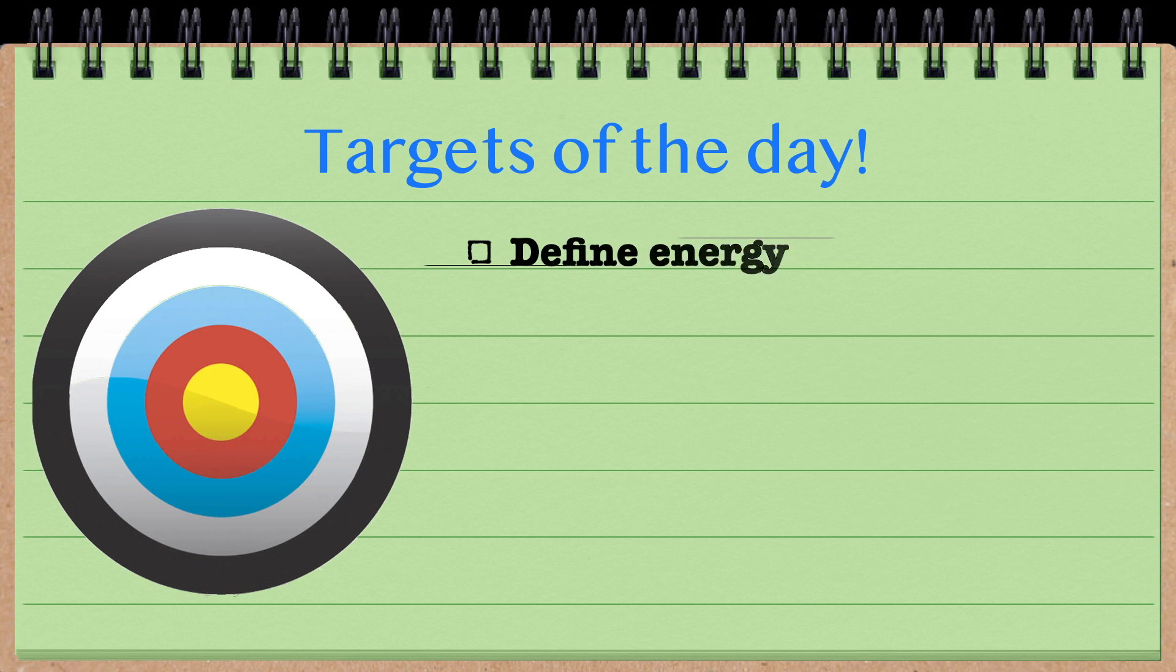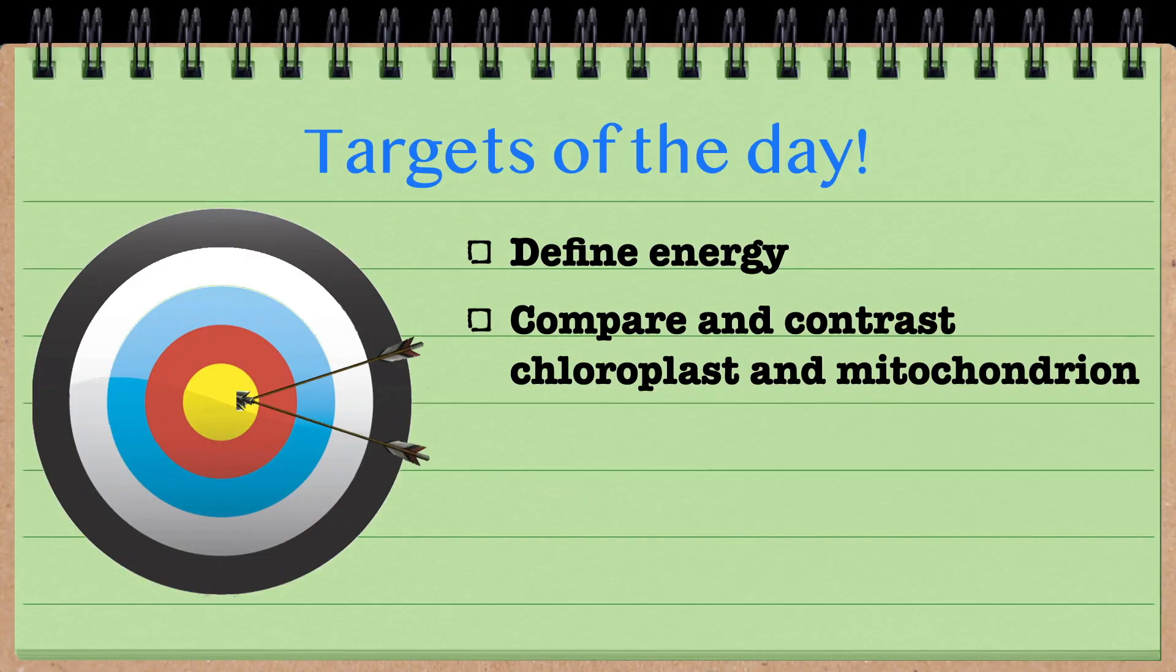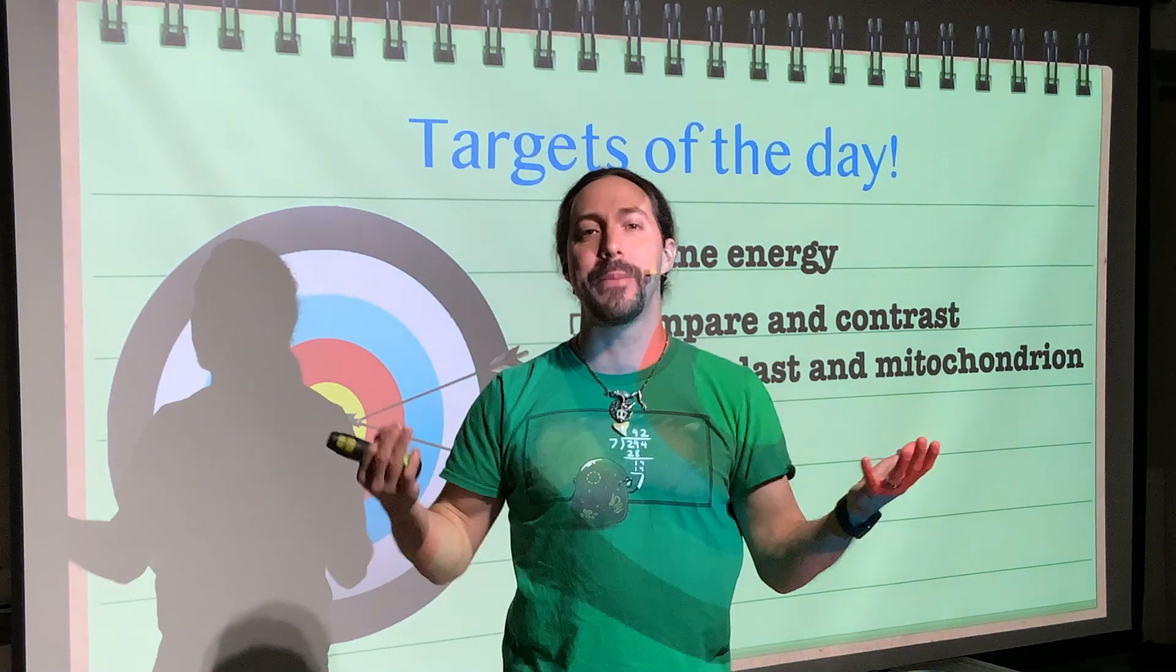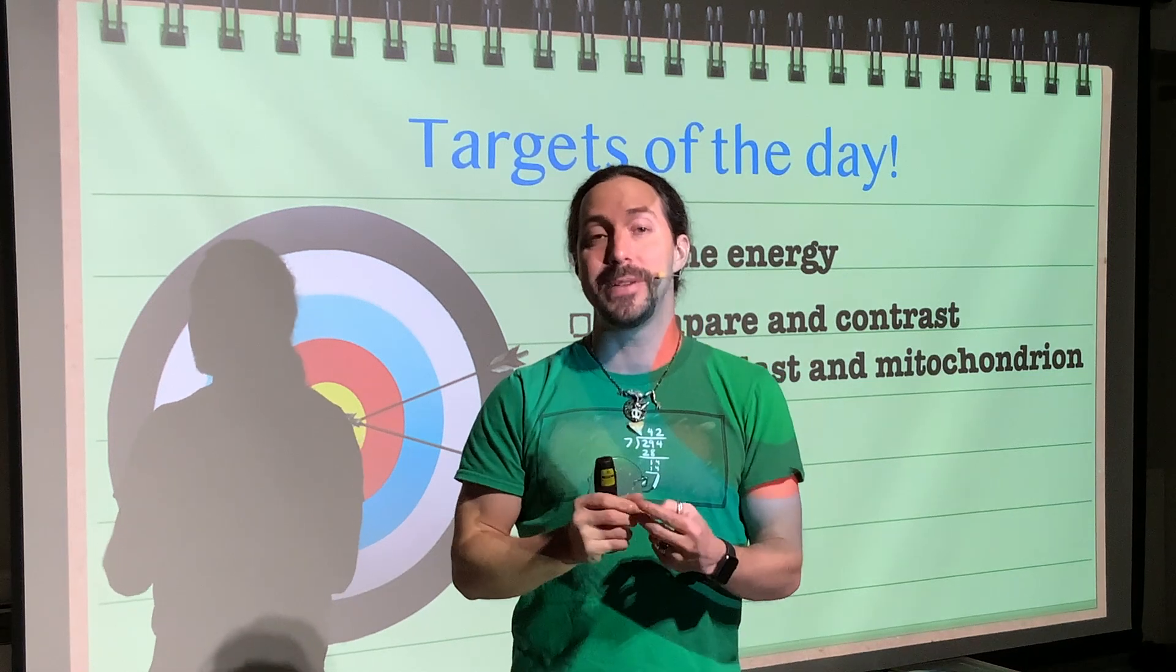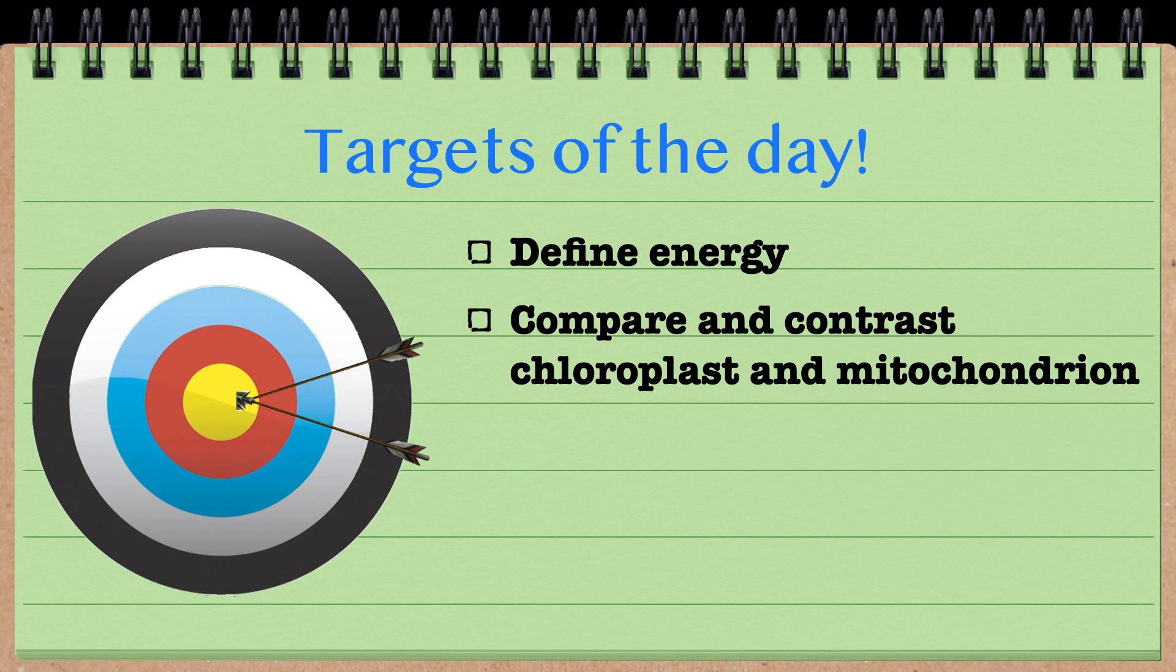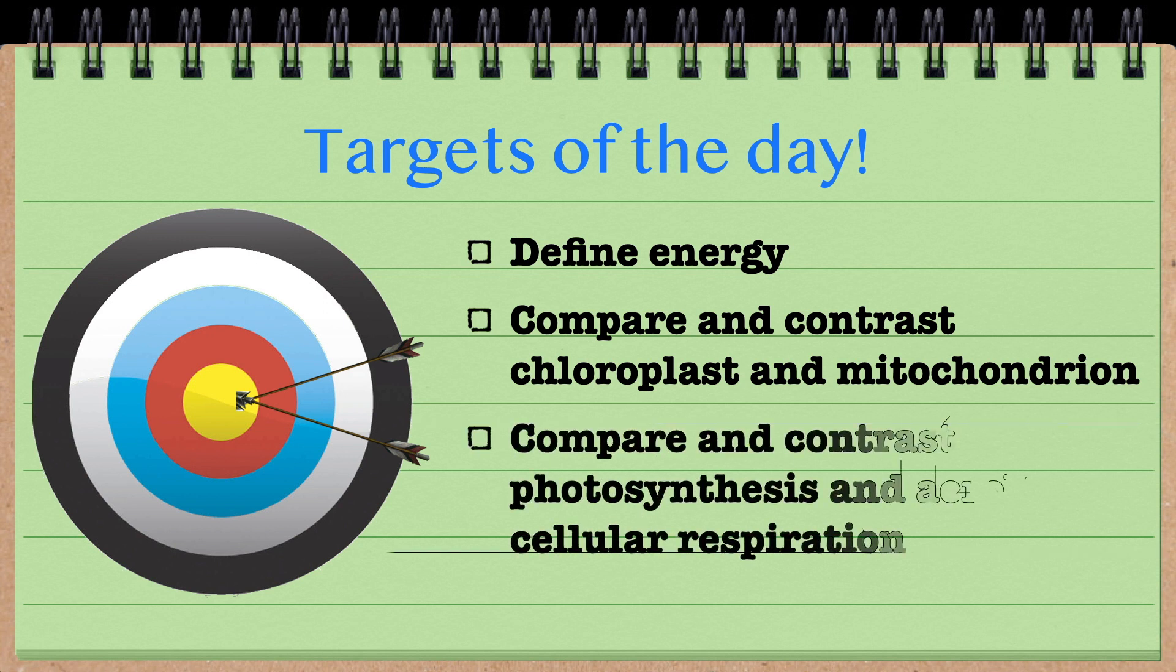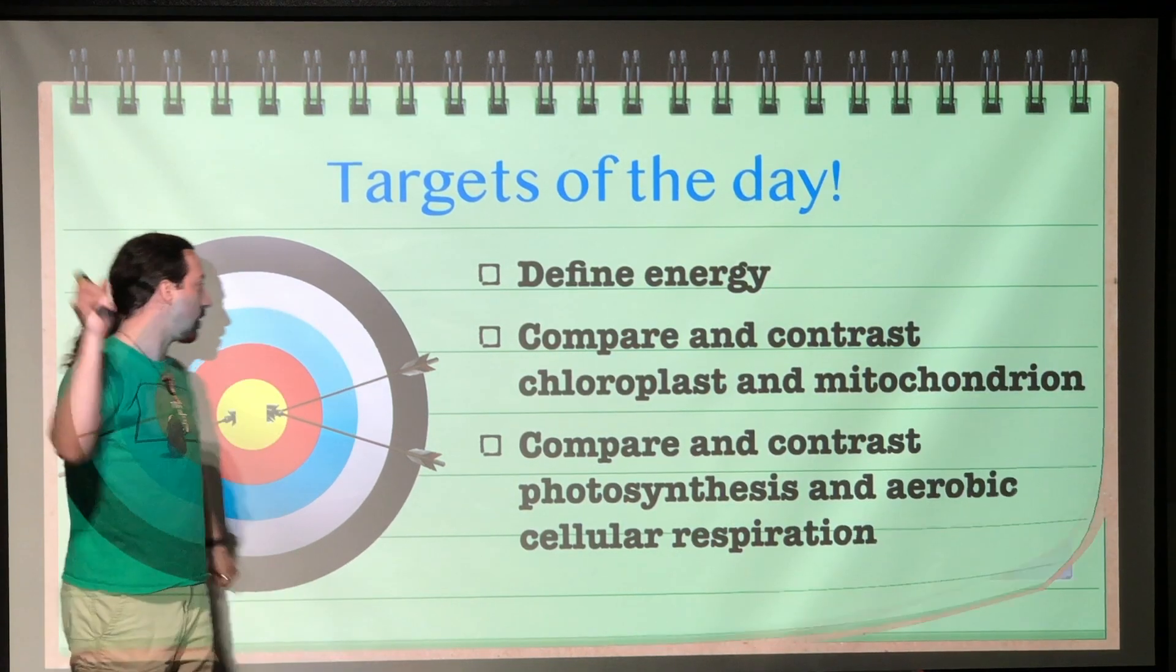So today, first we are going to define energy. What is it? How does it actually work? Next, we are going to compare and contrast chloroplasts and the mitochondria. These are two different organelles that are going to be very important for how a cell is able to get its energy and how it is able to use that energy. And then we are going to look at those processes specifically that the mitochondria and the chloroplasts use: photosynthesis and aerobic cellular respiration. Those are the goals for the day. Let's get started.